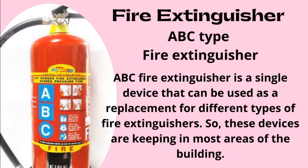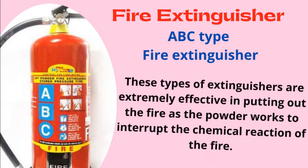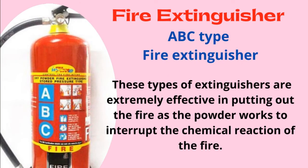ABC type fire extinguisher. An ABC fire extinguisher is a single device that can be used as a replacement for different types of fire extinguishers, so these devices are kept in most areas of a building. ABC fire extinguishers usually use a combination of mono ammonium phosphate and ammonium sulfate. It is often colloquially simplified as ABC dry chemical or multipurpose dry chemical. These types of extinguishers are extremely effective in putting out fires as the powder works to interrupt the chemical reaction of the fire.